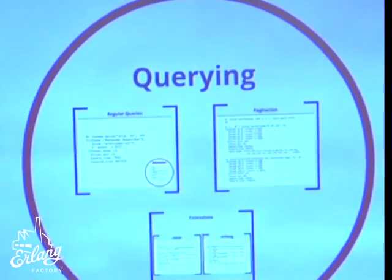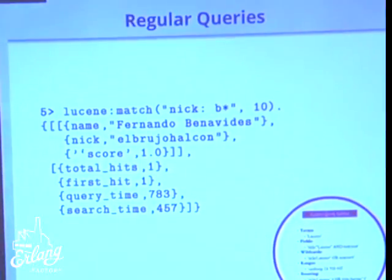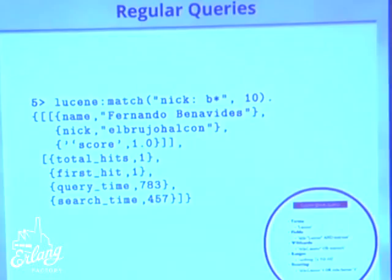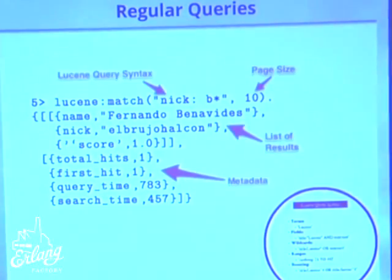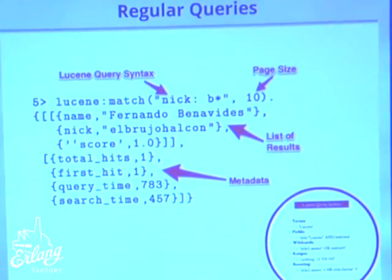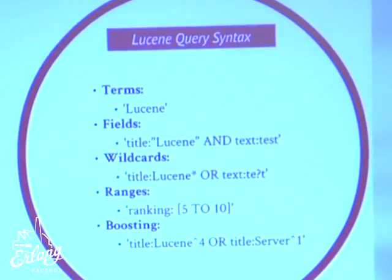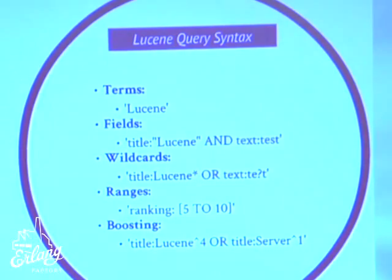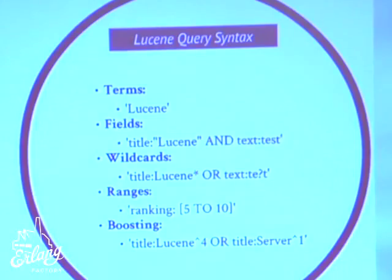To get results out, you query the index. For querying, you have the lucene:match/2 function. The first argument is a string in Lucene query syntax, and the second argument is a page size. When you run the query, it returns a tuple with two elements: a list of results (prop lists representing the indexed documents), and metadata including the total number of hits and benchmarking info. Lucene query syntax lets you do a wide number of things — finding stuff by fields, with wildcards, with ranges, and ranking results.